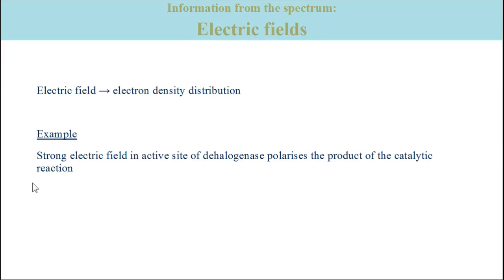Similar to hydrogen bonding, the electric field produced by the environment modifies the electron density distribution of a given molecule. A strong electric field has been detected for example in the active site of the halogenase where it strongly polarizes the product of the catalytic reaction.